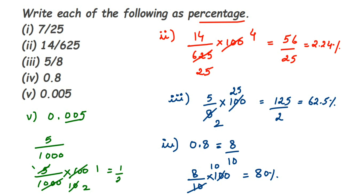1 upon 2 is nothing but half, or 0.5, so the answer is 0.5%. It's very simple — whenever they give you any question, whether it's a fraction or a decimal, first convert decimals into a fraction, then multiply by 100, bring to the reduced form, and that will be your answer. I hope this is clear. If you have any questions on percentage or any other chapter, you can drop a comment. Thank you so much for watching.